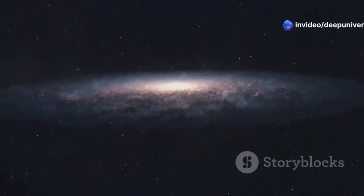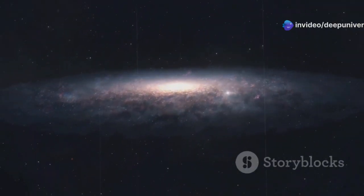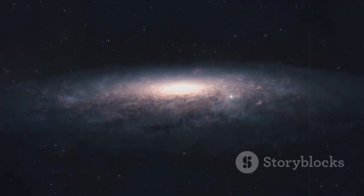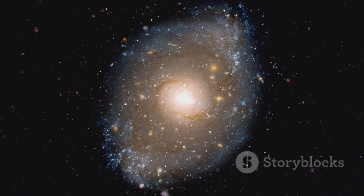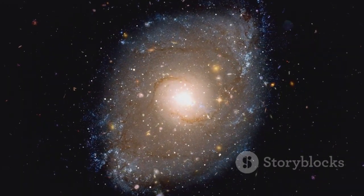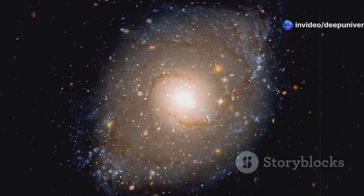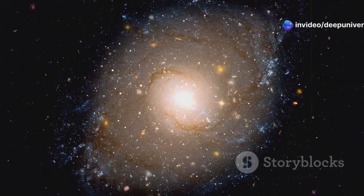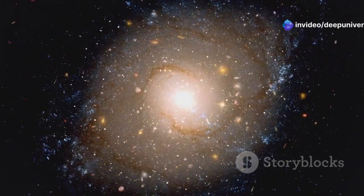Surrounding the disk of Andromeda is a halo. This halo is an extended spherical region that encompasses the entire galaxy. This halo is a spherical region that is much larger than the visible disk. It extends far beyond the main body of the galaxy, containing older stars and other materials.